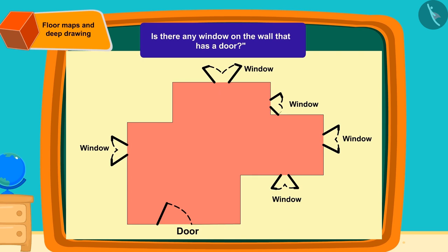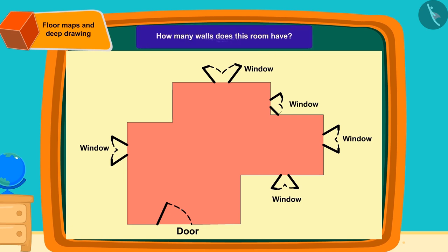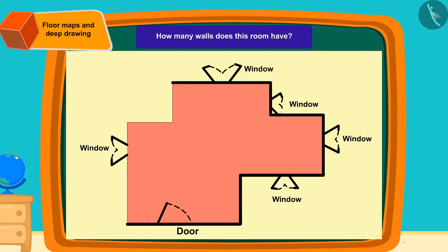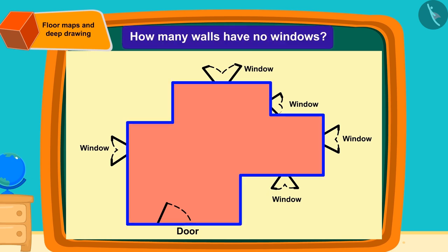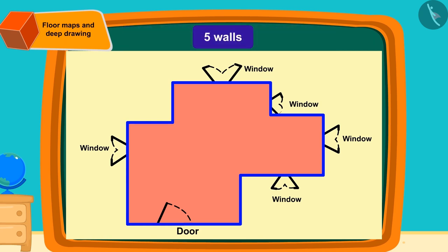Is there any window on the wall that has a door? There is no window in the wall where the door is. How many walls does this room have? This room has ten walls. How many walls are there with no windows? There are five walls with no windows.